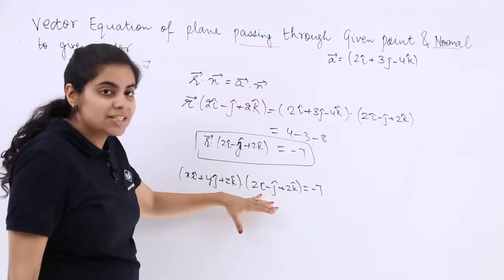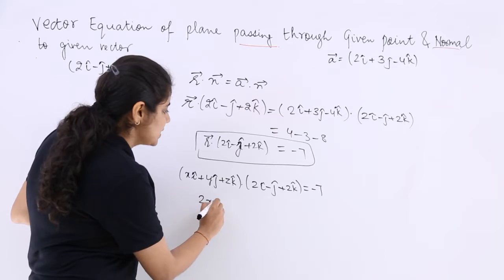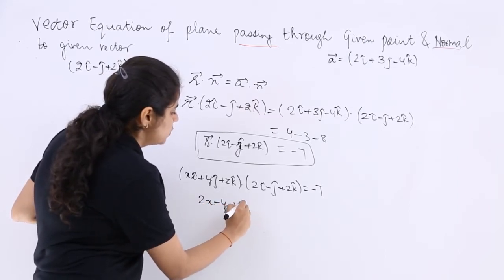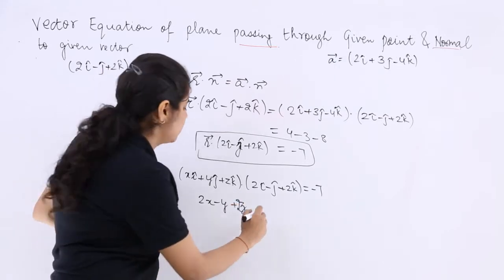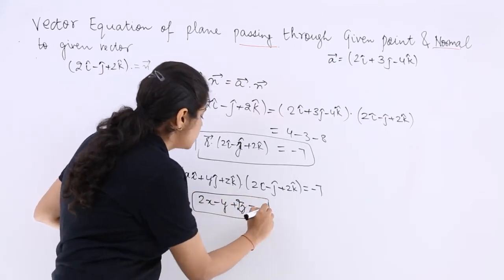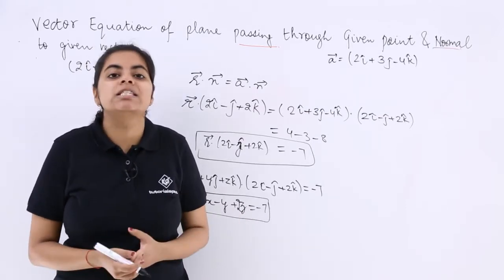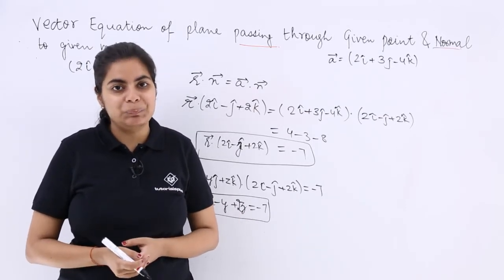Now just find the dot product. So it is 2x - y + 2z = -7. This is one way you can follow to solve questions based on this type of problem. Thank you.